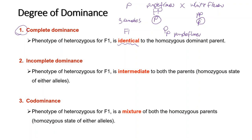However, relationships of alleles can be rather complex, and one member of a pair of alleles may not be completely dominant over the other. This gives rise to incomplete dominance and co-dominance.